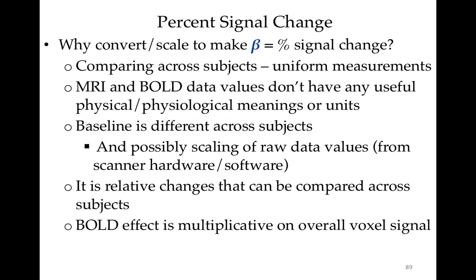Another practical issue is bringing different subjects' data into the same magnitude range in order to compare and contrast them across subjects. In AFNI, we generally do this with percent signal change conversion. We make the beta a percent signal change rather than fitting the data as-is in order to compare across subjects and uniformize the scale. Data from MRI and BOLD don't have useful physical or physiological meanings; the baseline differs across subjects, possibly from scanner hardware and software. Relative changes can be compared across subjects, but absolute levels cannot. The fMRI doesn't measure an absolute level of neural activity.